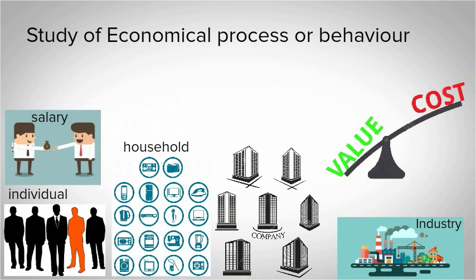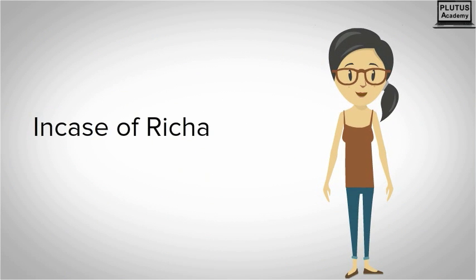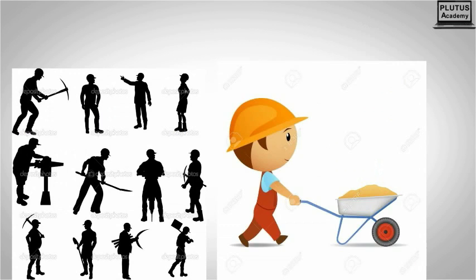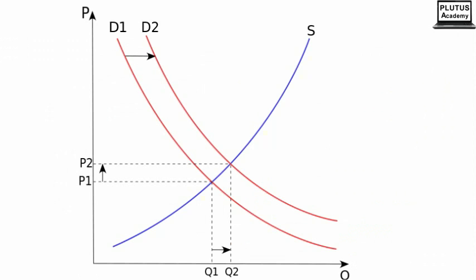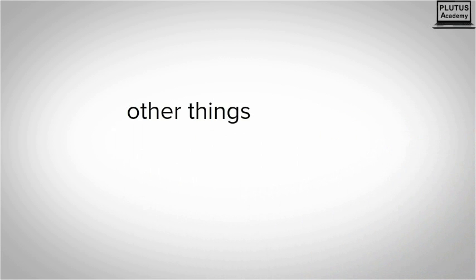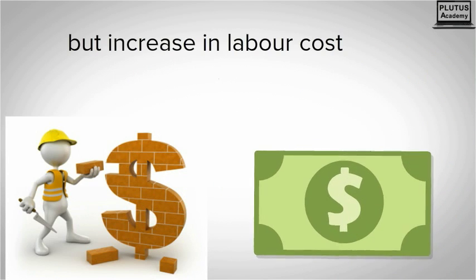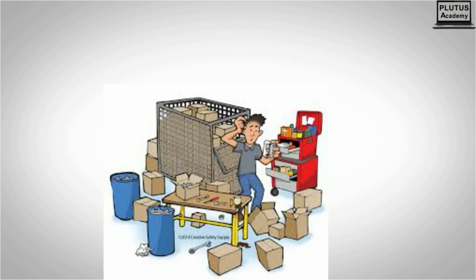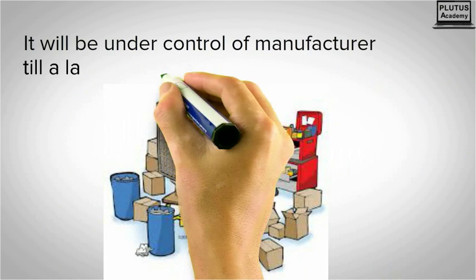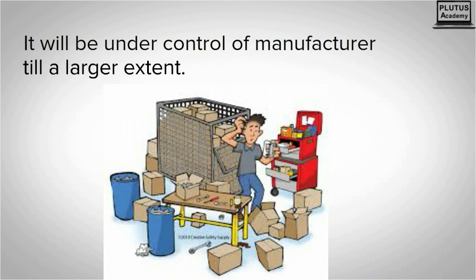Salary, cost of production, etc. In the case of Richa, if laborers who manufacture spectacles increase their labor charges, then maybe Richa will have to settle for lower quality spectacles, or she will have to reduce expenditure on other things. But an increase in labor cost is part of micro-economics — it will be under the control of the manufacturer to a larger extent.